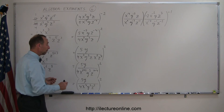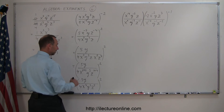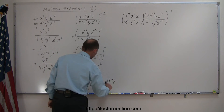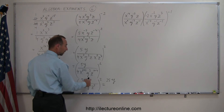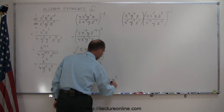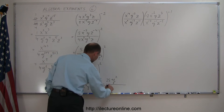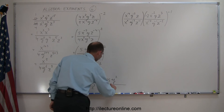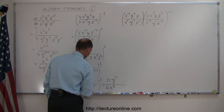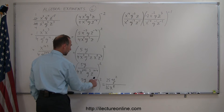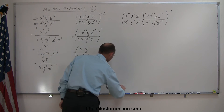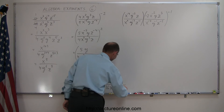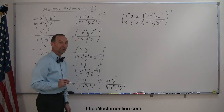Now I'm ready to apply this exponent to everything inside the parentheses. This equals 5² which is 25, times y to the first power raised to the second power — that's 1 times 2, or y². Divided by 4² which is 16, times x⁴ raised to the 2nd power — that's 4 times 2, so x⁸. Then y³ raised to the 2nd power is y to the 3 times 2, or y⁶. And finally z⁵ raised to the 2nd power is z to the 5 times 2, or z¹⁰. And that's the answer for that one.